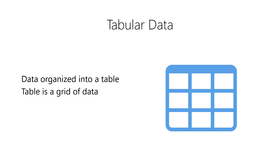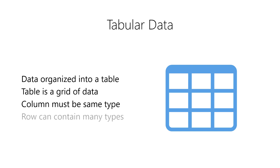A table is a two-dimensional grid of data. However, unlike a matrix, all of the elements in a table do not need to be of the same data type. Rather, all data in each column must be the same data type, which we refer to as homogenous data. However, all data in a row can have a different data type from column to column, which we refer to as heterogeneous data.